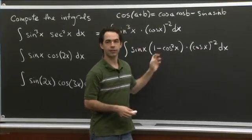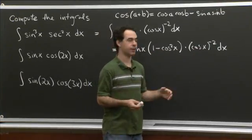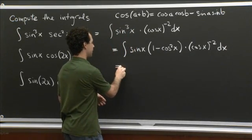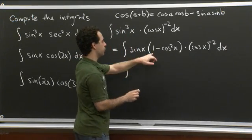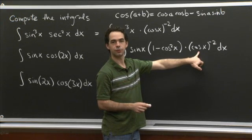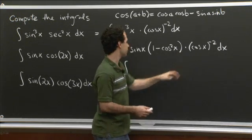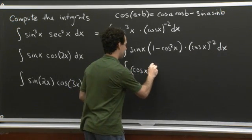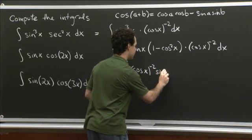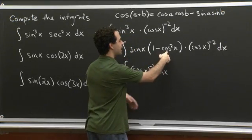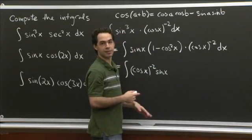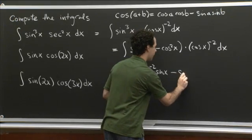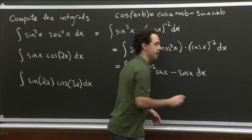And now you take all these cosines and you multiply them together and you see what you've got. So in this case, that's equal to the integral, OK, so 1 times cosine to the minus 2 is just cosine to the minus 2. So this first term is cosine x to the minus 2 sine x. And then minus, OK, we have cosine squared times cosine to the minus 2. So that one's even simpler. That's just minus sine x dx.